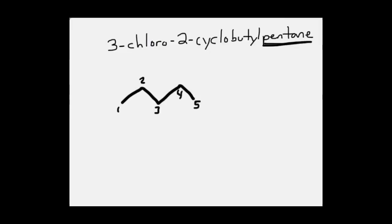On carbon 3 is my chlorine atom. On carbon 2 is a substituent of cyclobutane. So we draw the bond out to the ring and then construct the ring. Nothing else listed in this name, so this is the appropriate structure.